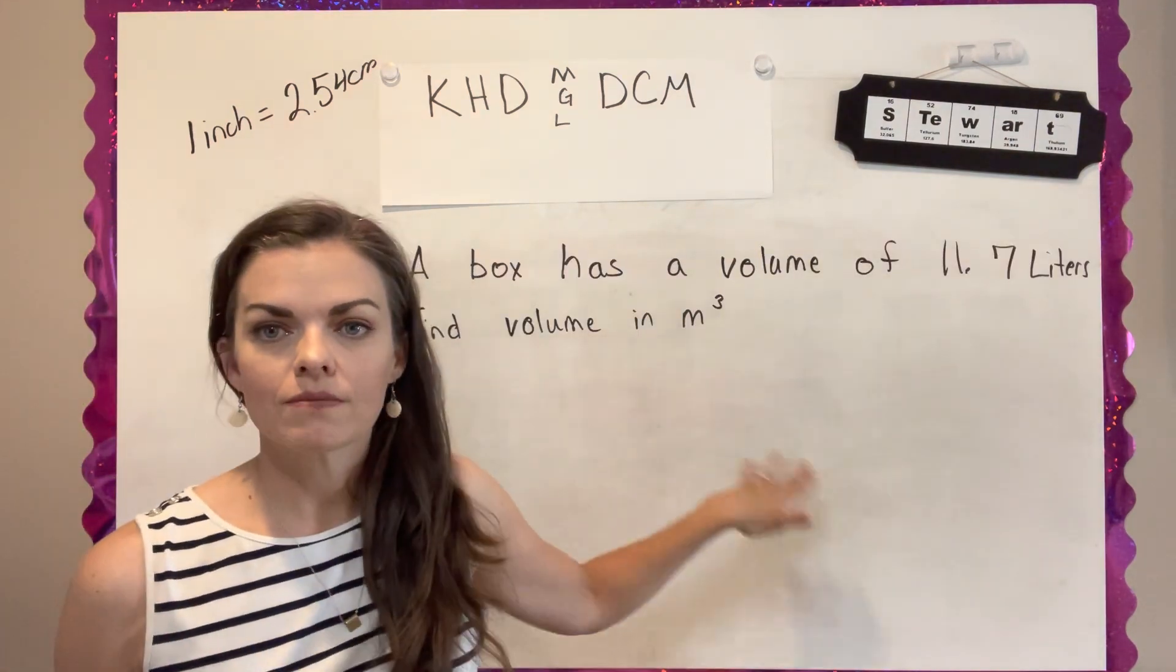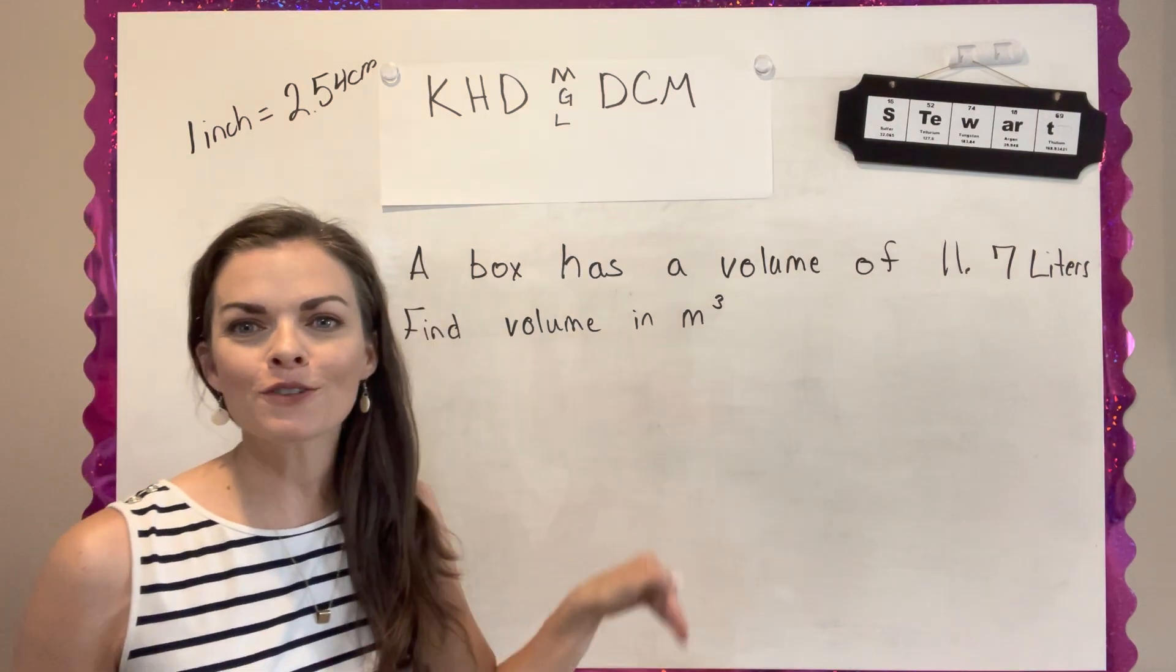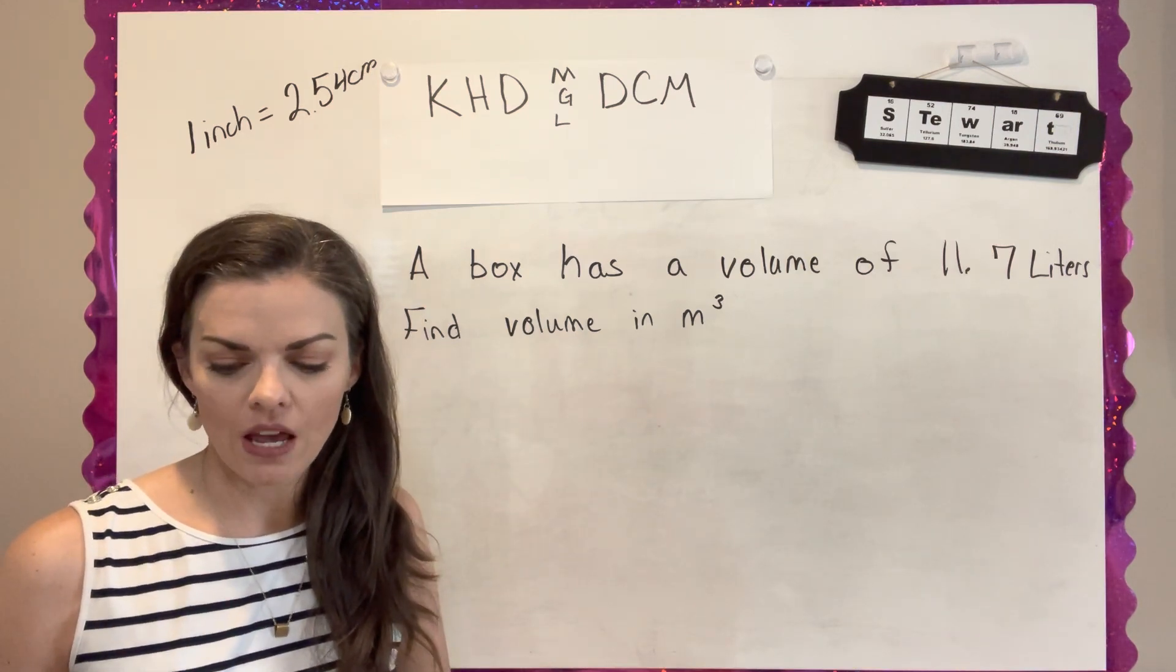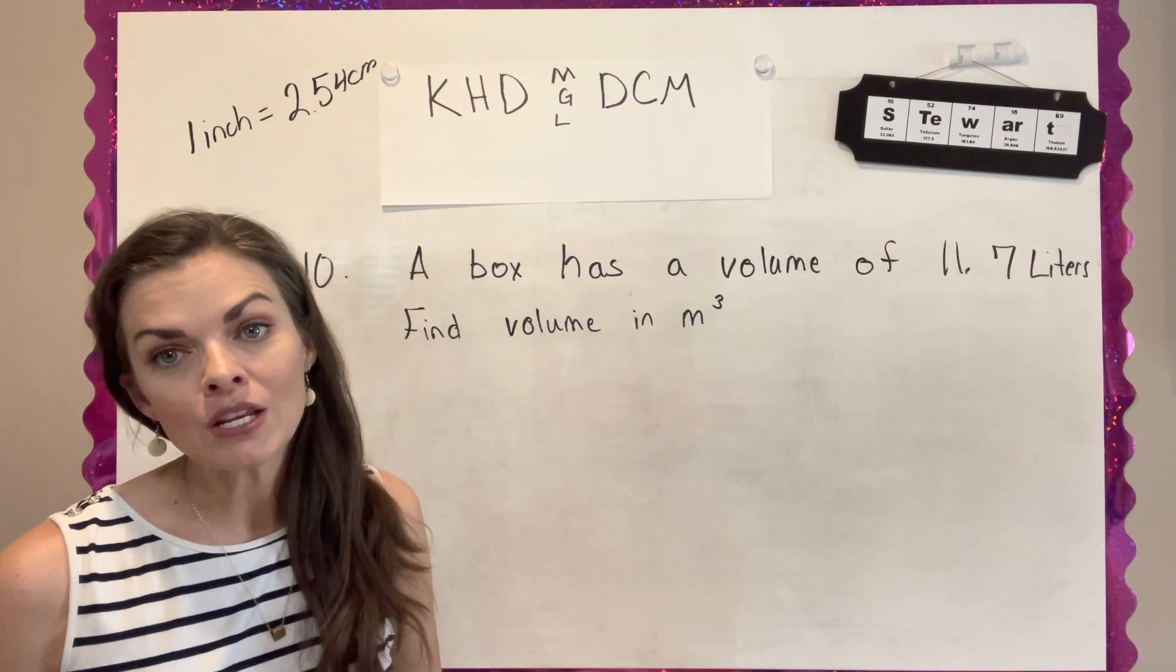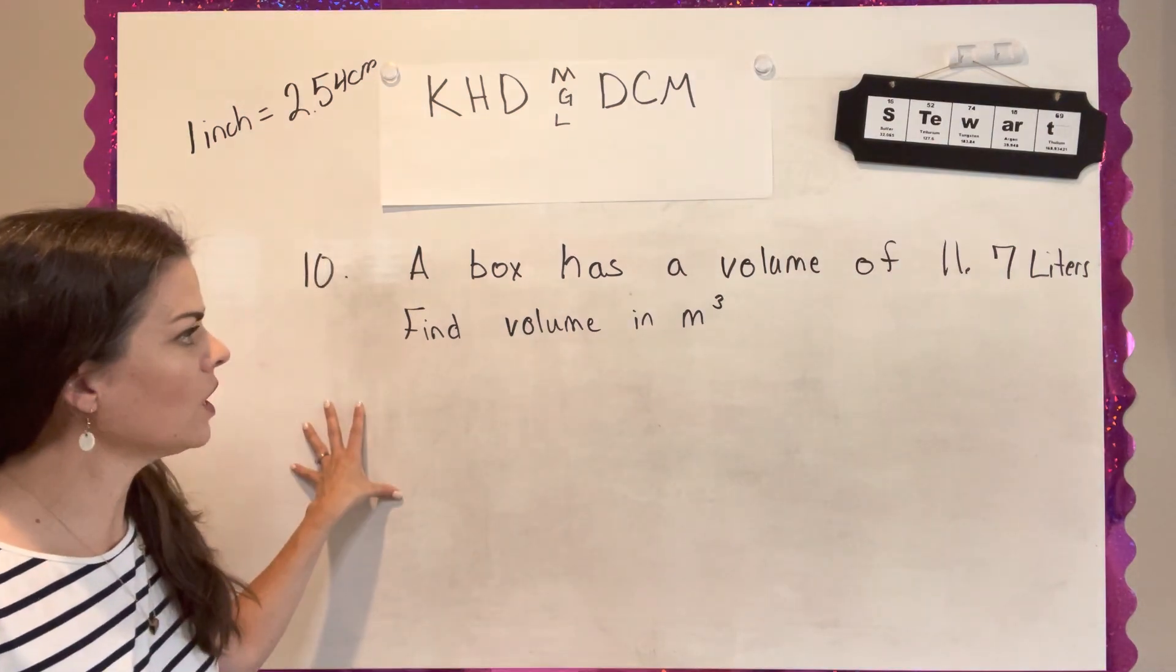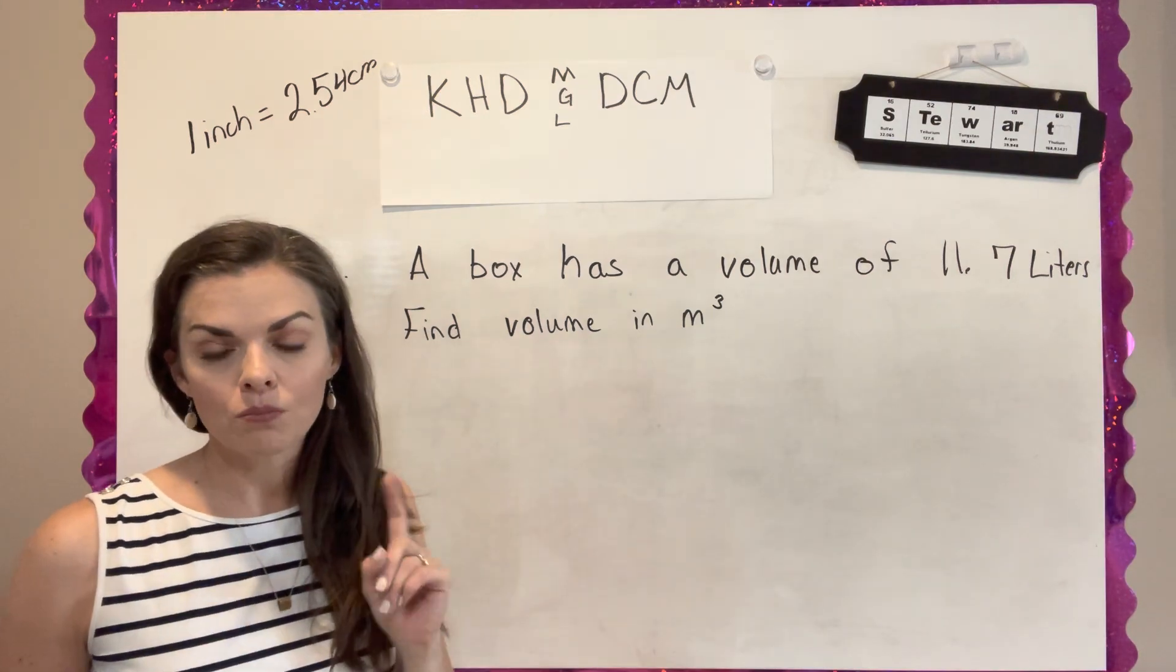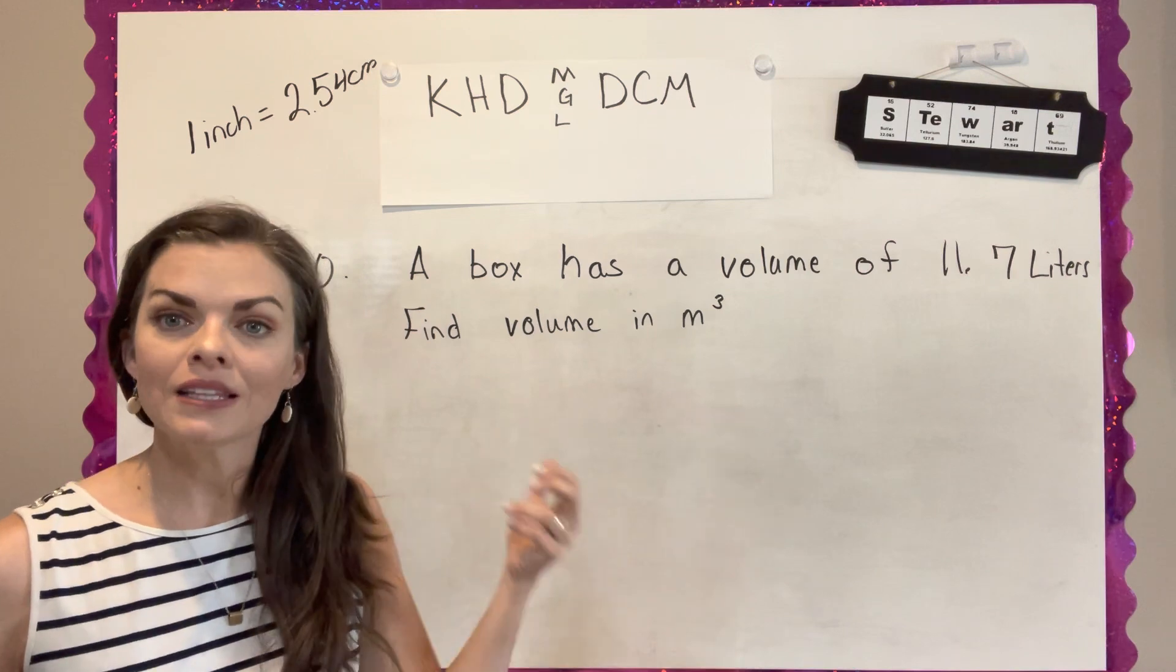Question number 10 stumps everybody every year. And so it has so many conversion factors, it is just confusing. But it says a box is measured to have a volume of 11.7 liters. And it wants you to know what its volume is in meters cubed. And so the path for this is always tricky to people, because it's hard to see how I can go from liters to meters. But remember what I just said, a centimeter is a milliliter.